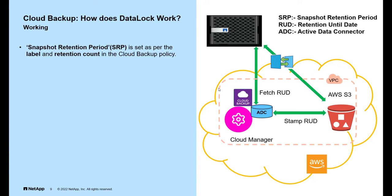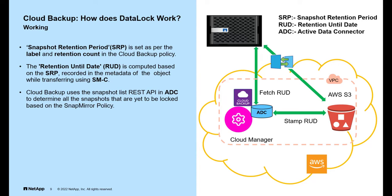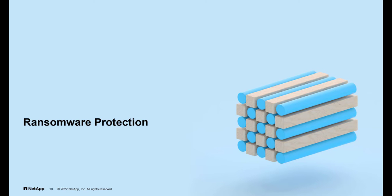The snapshot retention period is set as per the label and retention count defined in the cloud backup policy. The retention until date is computed based on the snapshot retention period recorded in the metadata of the object while transferring using SnapMirror to Cloud. Cloud backup uses the snapshot list REST API in the Active Data Connector to determine all snapshots not yet locked based on the SnapMirror policy. For each of these snapshots, cloud backup uses the Active Data Connector to stamp the retention until date on all objects belonging to the snapshot, guaranteeing the snapshot is locked until the retention until date expires.